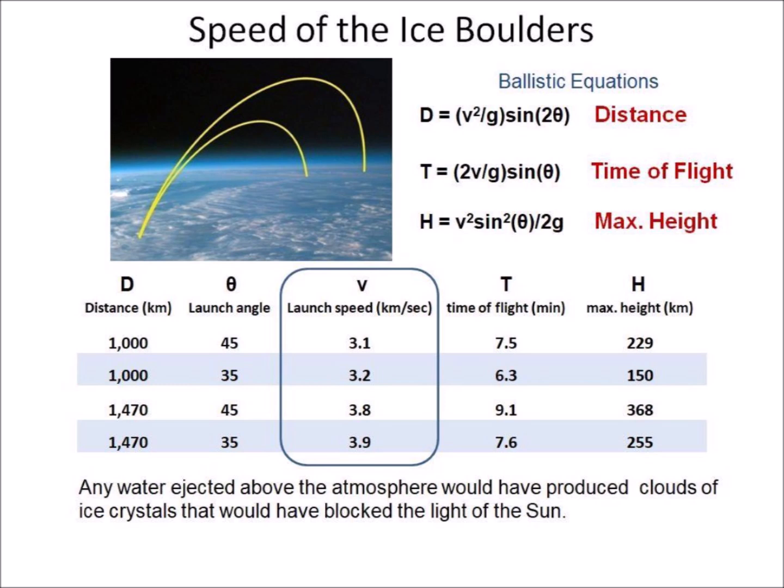In addition, the ballistic equations show that the ice boulders had suborbital trajectories in the vacuum of space from 150 to 368 km above the surface of the Earth, which is well above the 100 km limit of the atmosphere.